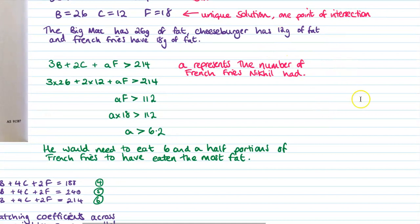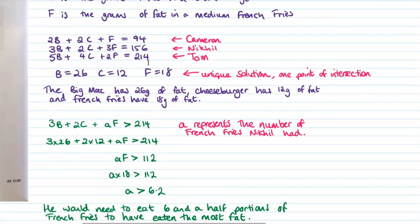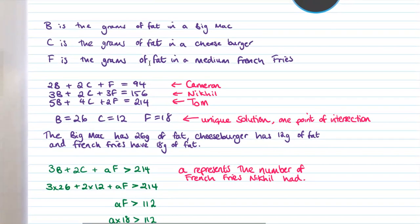So we don't actually know how many packets of French fries or portions of French fries that Nicol's had. So give that a variable there that we're going to try and work out. So I've called that one A. You could call it any sort of constant term you want to put in there, but I've just chosen A. So we've got we know he had three Big Macs and two cheeseburgers, but we don't know how many fries. We want him to have had the most fat. So his total now needs to come to more than 214 because 214 was the most that we had before with Tom. And we want to think about Nicol having the most.